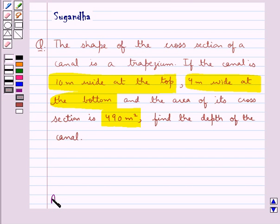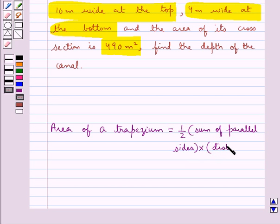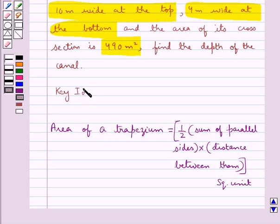We know that the area of a trapezium is equal to half times the sum of the parallel sides of the trapezium times the distance between them, in square units. So this is the area of a trapezium. This is the key idea that we use for this question.